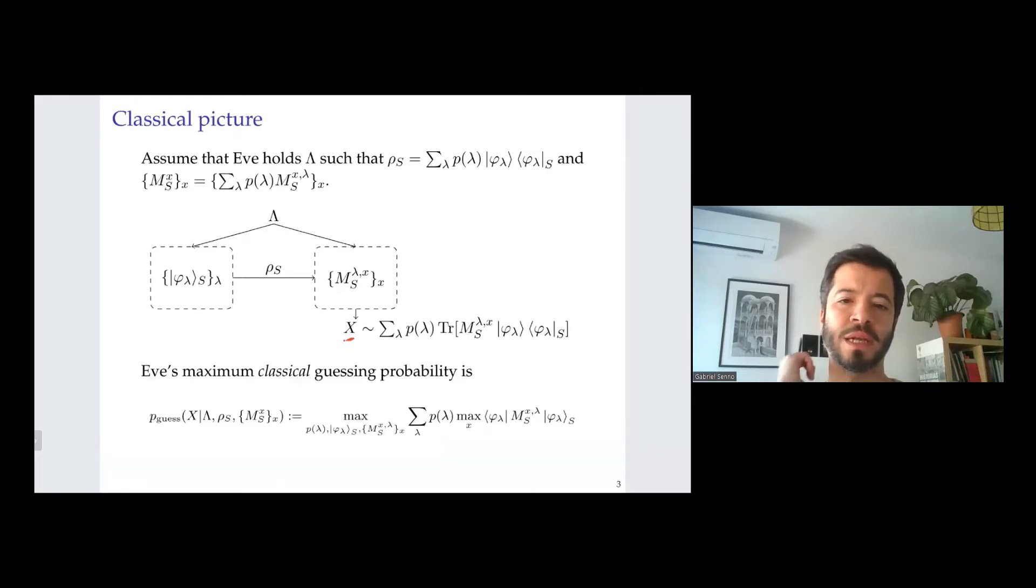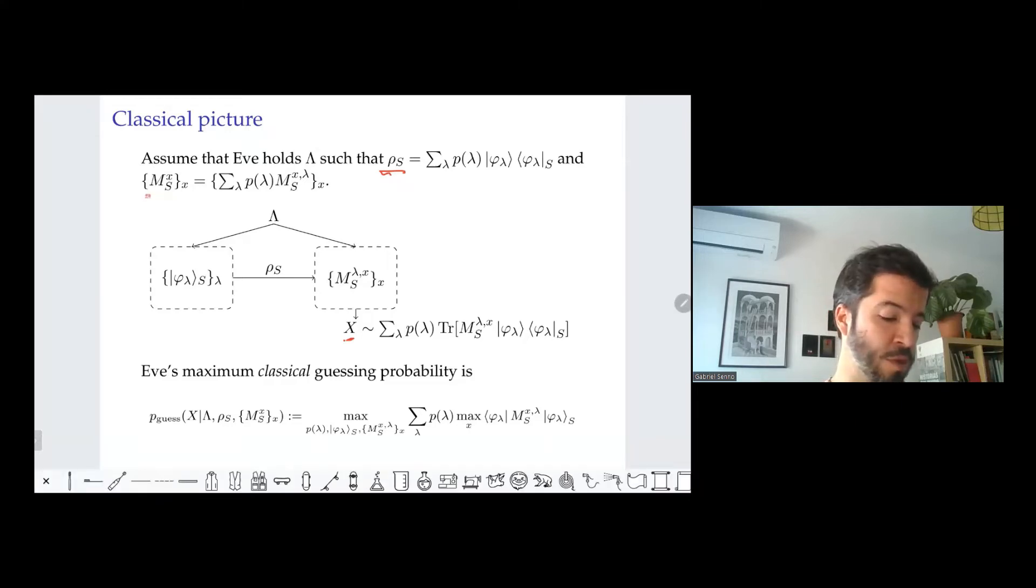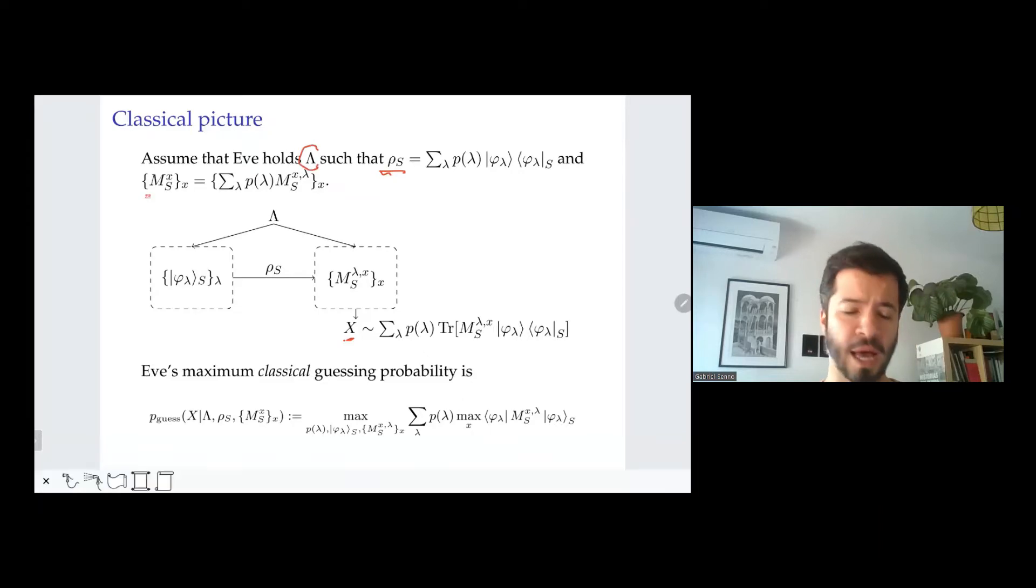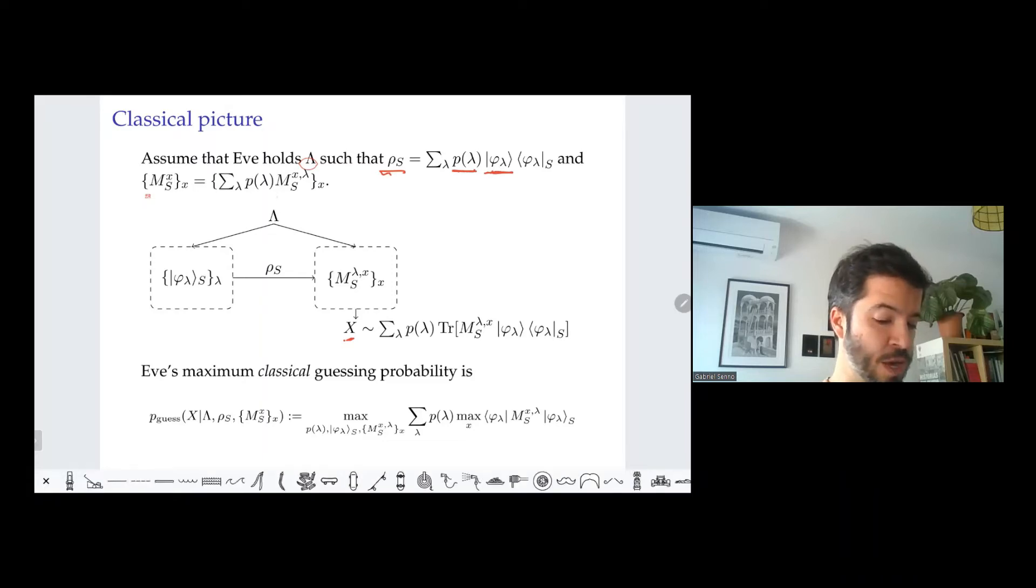So let me start with the classical picture, which is a straightforward generalization of the one for the setting in which there are no correlations with the measurement, the one that's already been considered in the literature. So what one assumes here is that every time the system S is preparing the state rho_s and the measurement M_S is performed, what is actually happening is that some classical random variable lambda is being sampled with probability p_lambda, the system is actually in some pure state phi_lambda, and the extremal POVM M_S lambda is being performed.